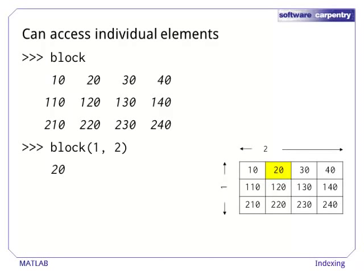Individual elements in an array can be accessed using a comma-separated list of integer indices. In most programming languages, the first element of an array is element 0. In MATLAB, indexes start at 1.